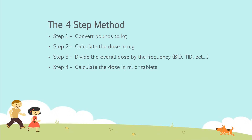Here is the four-step method. Step one: always convert pounds to kilograms, because all orders are written in terms of kilograms. Step two: calculate the dose in milligrams. Step three: sometimes doses are given bid or tid like adults, so divide the total daily amount by the frequency. Step four: do a basic medication calculation to determine how many milliliters or tablets the patient is actually going to receive.